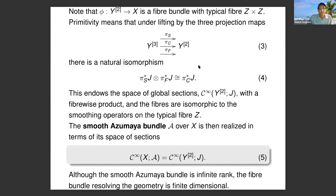Primitivity means under the lifting by the three projection maps, so if you go to Y^3 the three projection maps to Y^2, there's a natural isomorphism of J when you pull it back on π_S and J when you pull it back on π_F isomorphic to J pullback on π_C, the center one. This data is sometimes called a bundle gerbe.